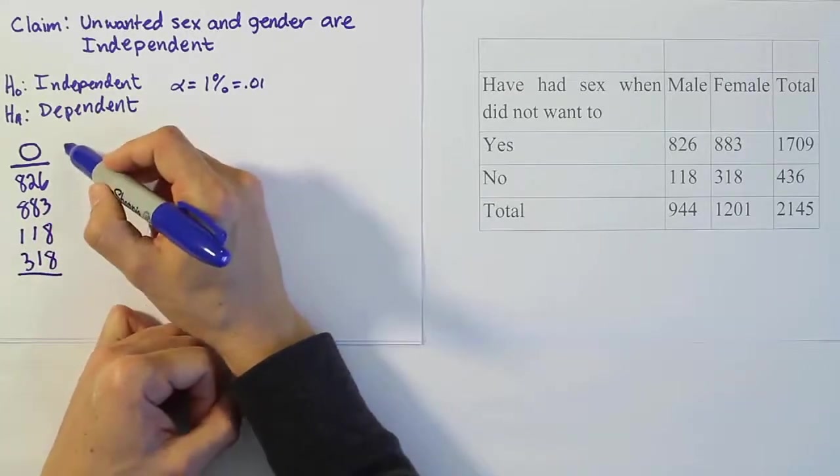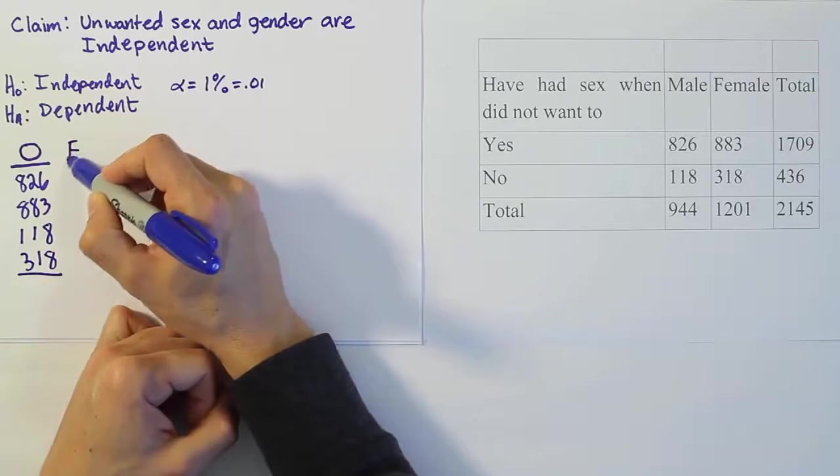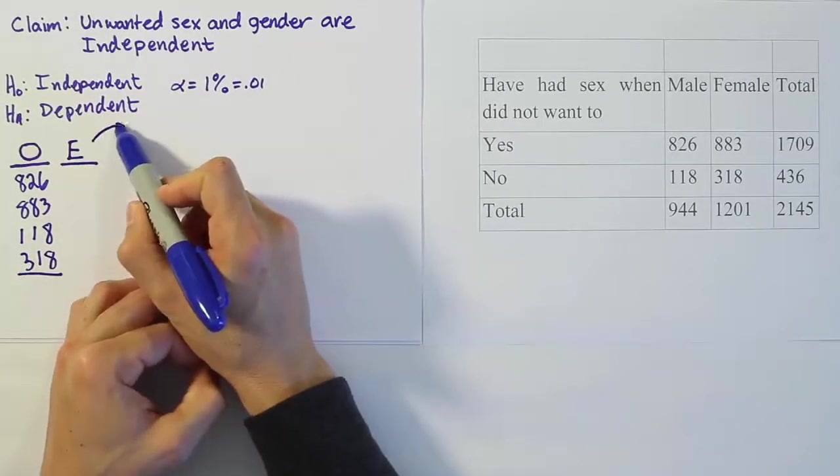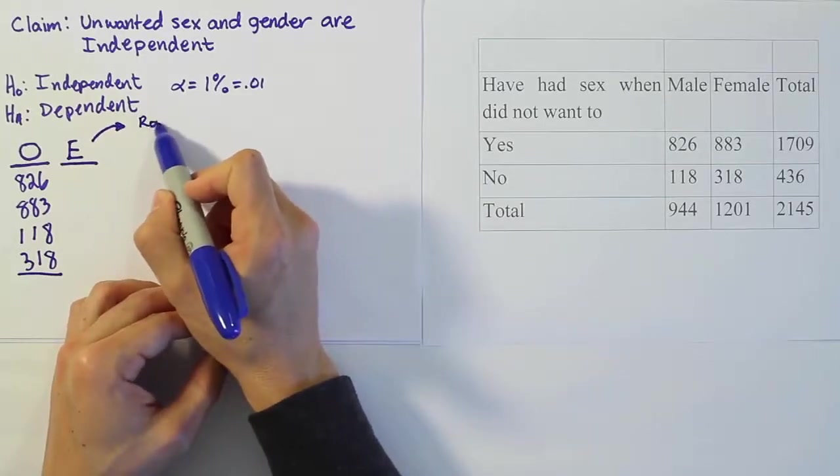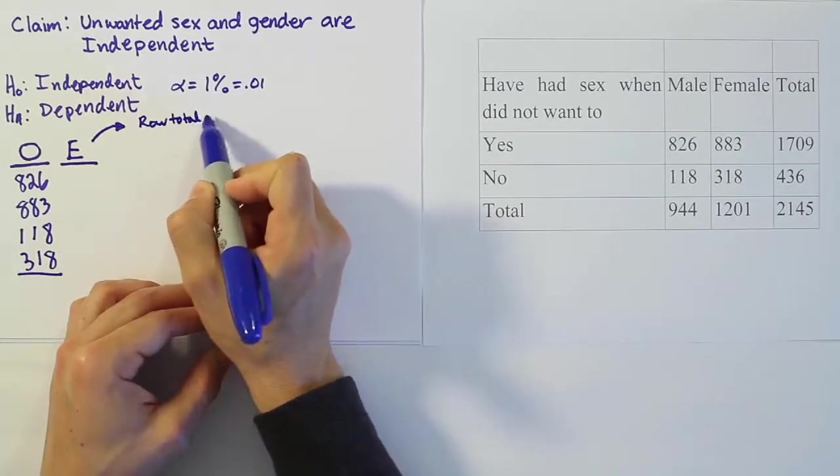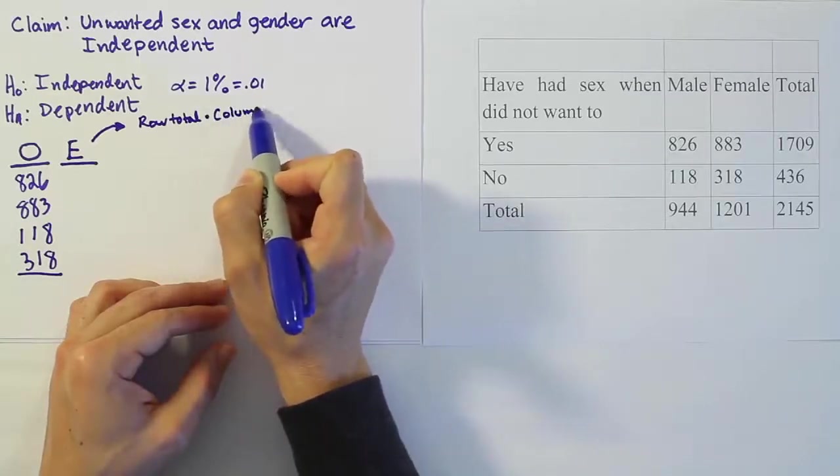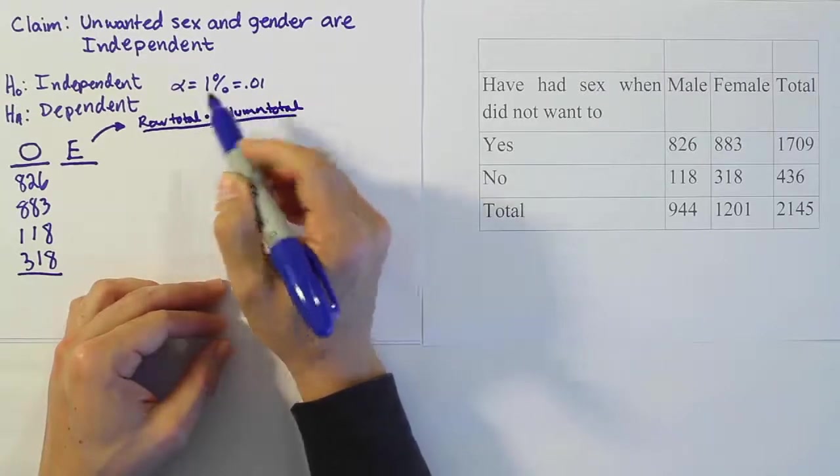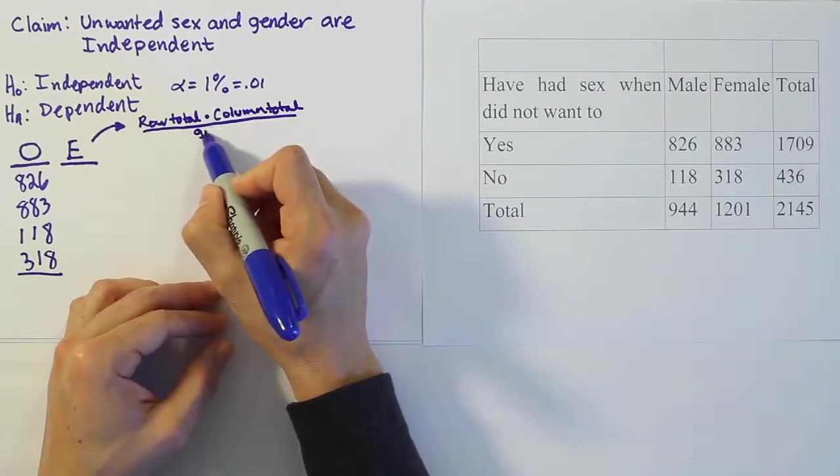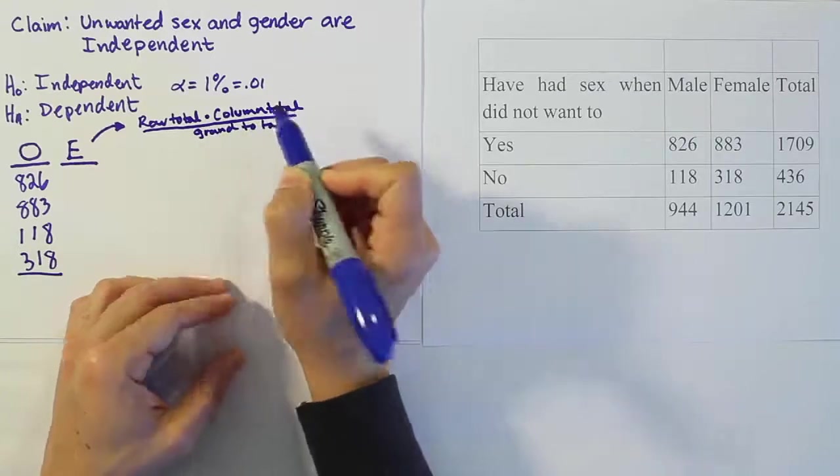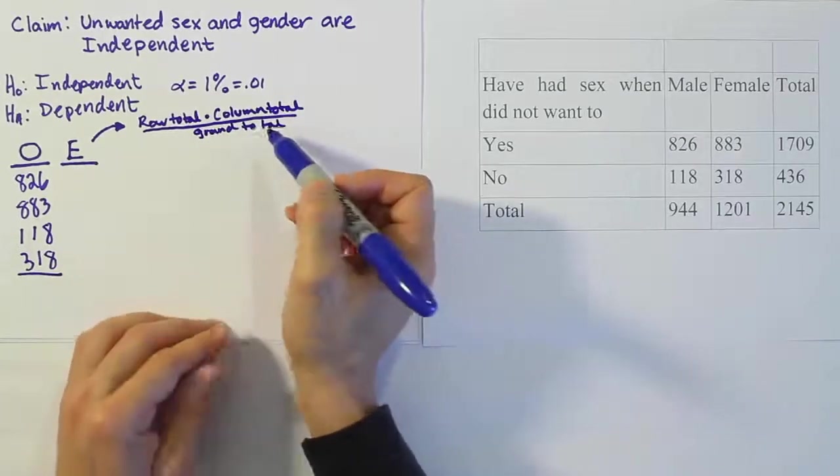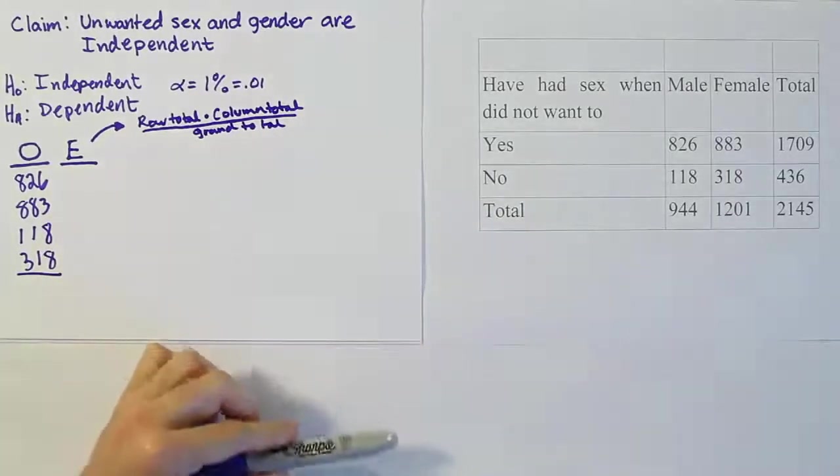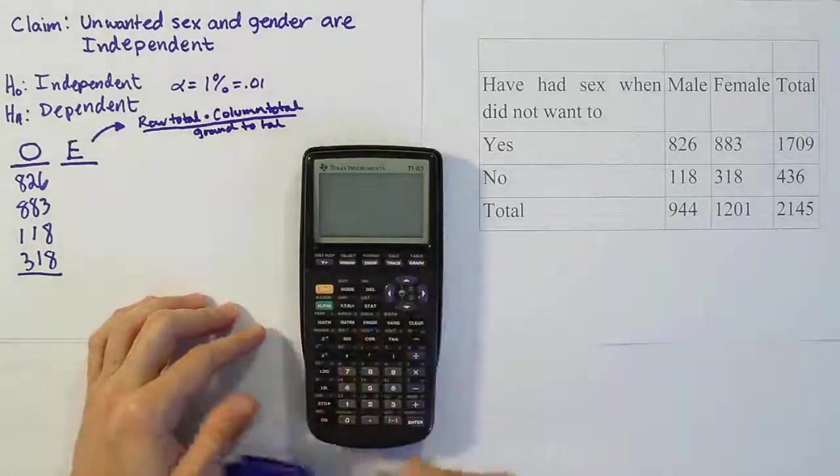The next column we need to come up with is the expected value column. It's a little different for the chi-squared test of independence. The formula is going to be row total times column total all divided by the grand total. Try to remember that's the formula for the expected values, and you'll understand where I'm getting my answers from as I work these problems out.